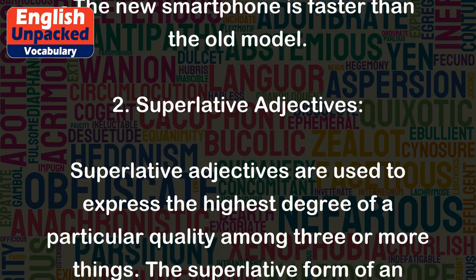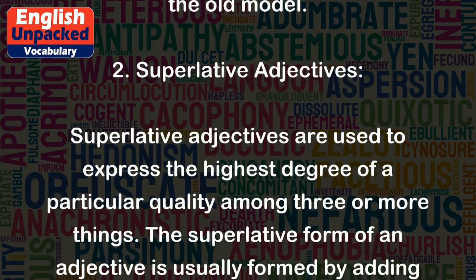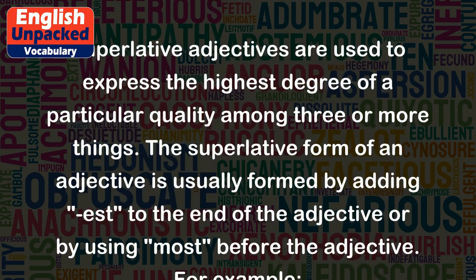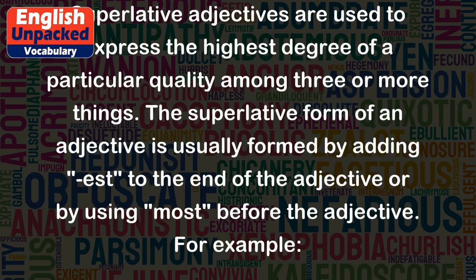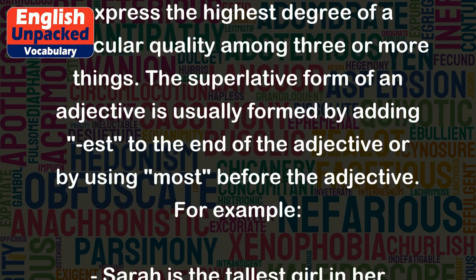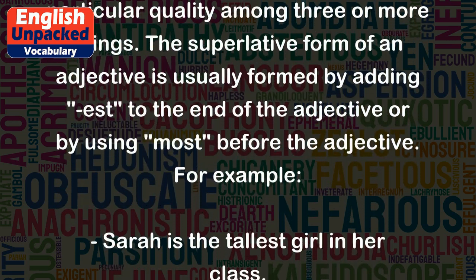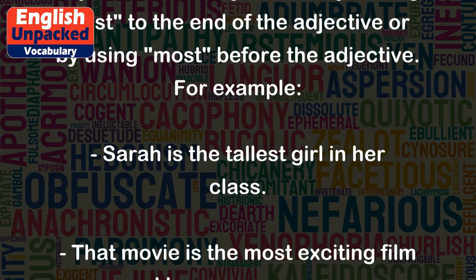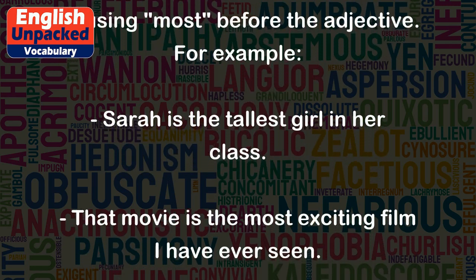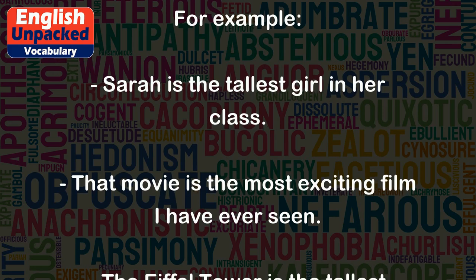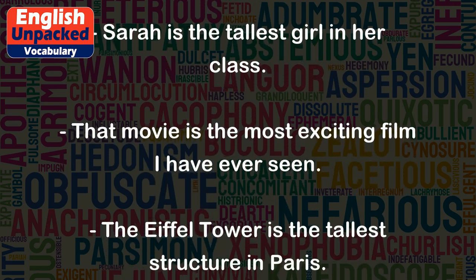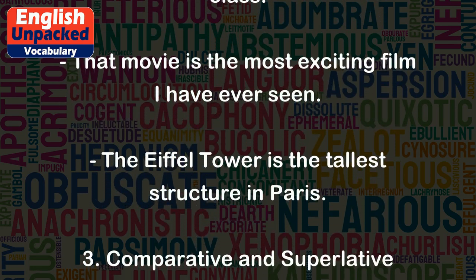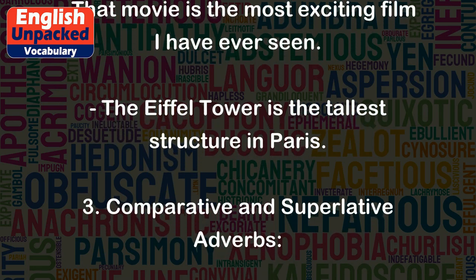2. Superlative Adjectives. Superlative adjectives are used to express the highest degree of a particular quality among three or more things. The superlative form of an adjective is usually formed by adding -est to the end of the adjective or by using 'most' before the adjective. For example: Sarah is the tallest girl in her class. That movie is the most exciting film I have ever seen. The Eiffel Tower is the tallest structure in Paris.